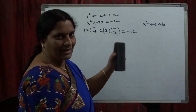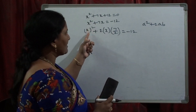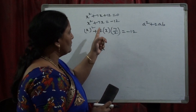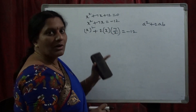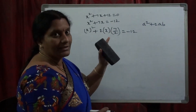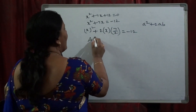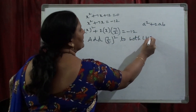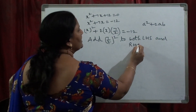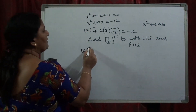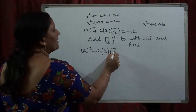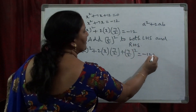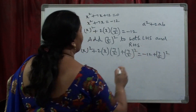Add b² to both LHS and RHS. In this LHS, x² is a², and 2·x·(7/2) is 2ab, so b = 7/2. Add (7/2)² to both LHS and RHS. So x² + 2·x·(7/2) + (7/2)² is added on LHS, and RHS becomes −12 + (7/2)².